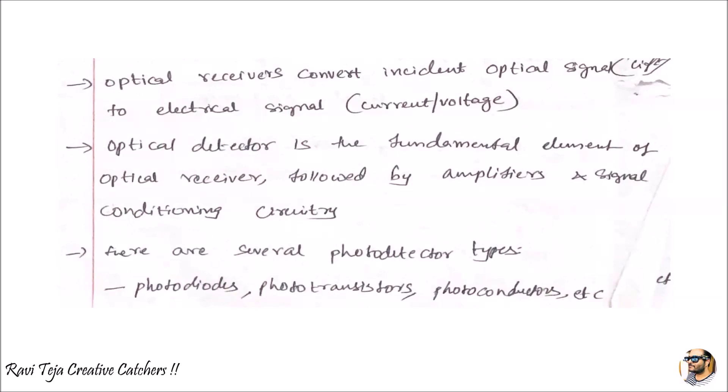There are several types of light detectors or photodetectors, which we can call photodiodes, phototransistors, photoconductors, etc. Every component does the same thing - converting light energy into electrical energy.